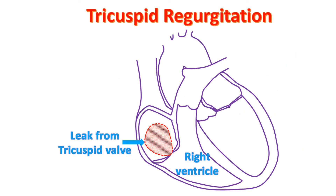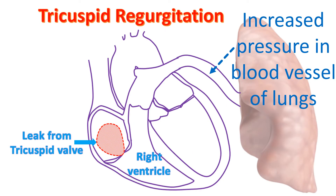Tricuspid valve can be involved in rheumatic heart disease in two ways. Direct damage to the valve can cause leak or narrowing. Narrowing is called tricuspid stenosis. Tricuspid valve is the valve between the right upper and lower chambers of the heart. Another way of involvement of tricuspid valve is by increasing the pressure in blood vessels of the lungs. When the mitral valve is narrowed, back pressure is transmitted to the lungs.